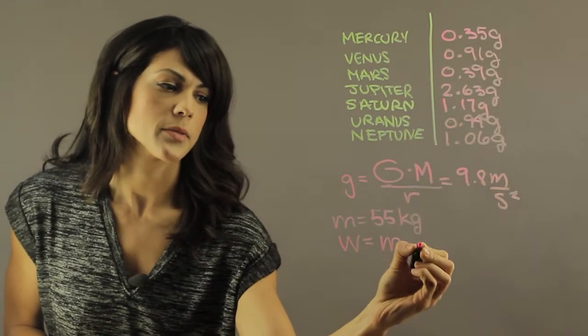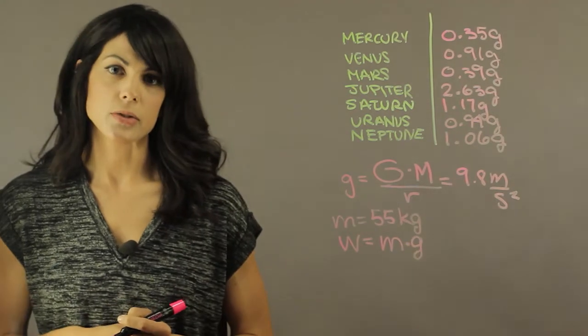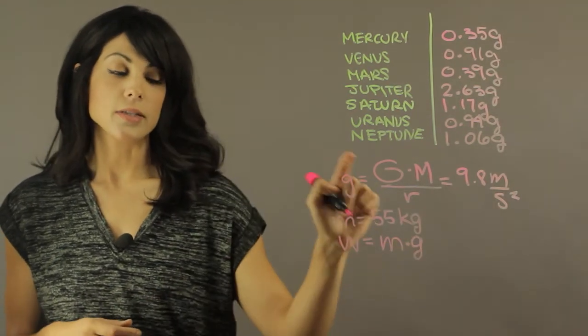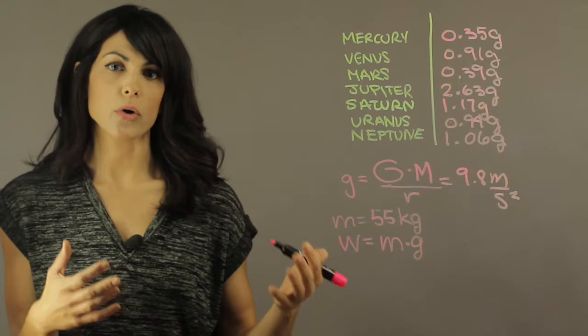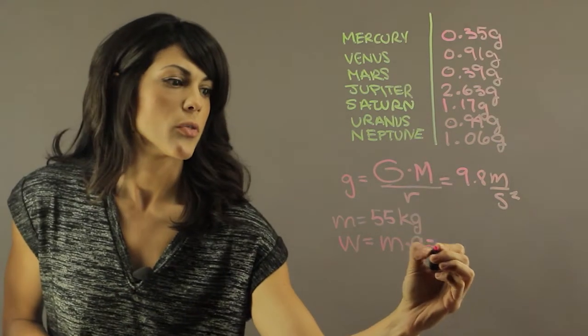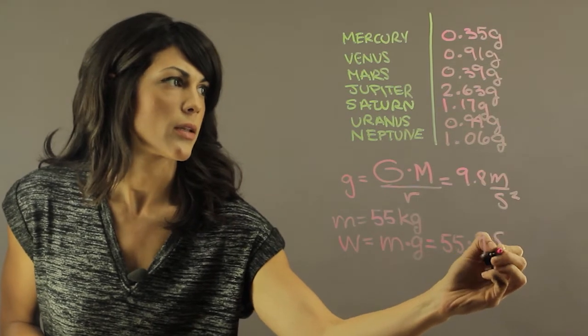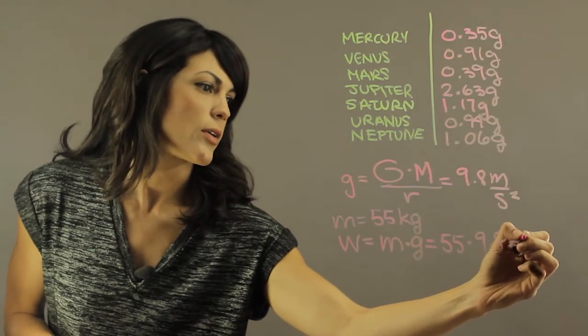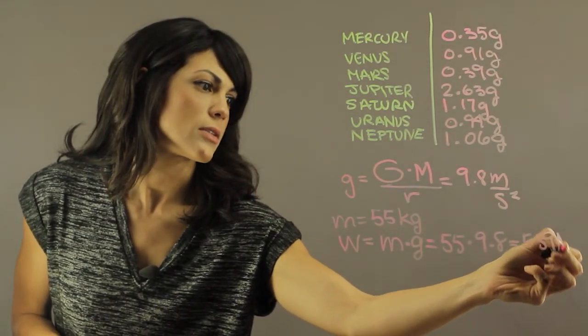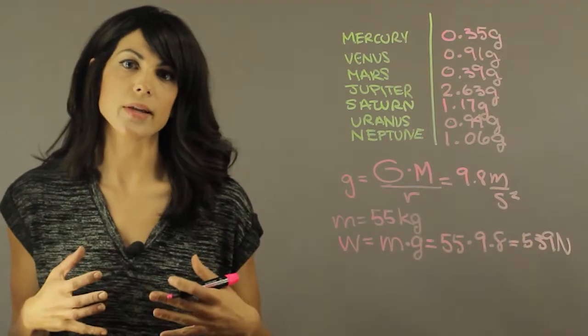which is the mass times the gravitational surface gravity constant, and that will give you the force of your weight. So this will be 55 kilograms times 9.8, and this is 539 newtons. Weight is actually a force.